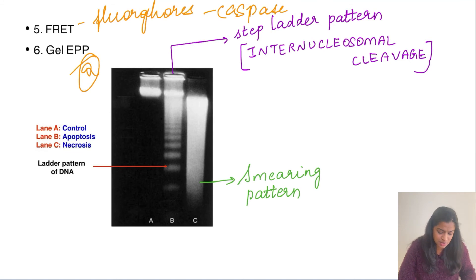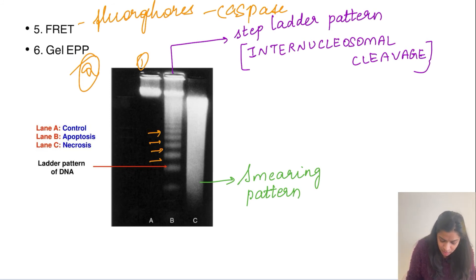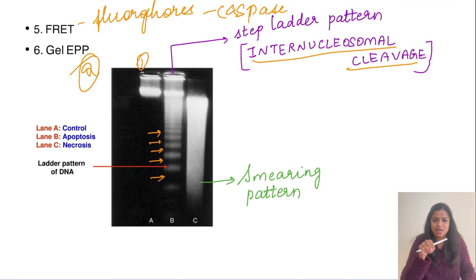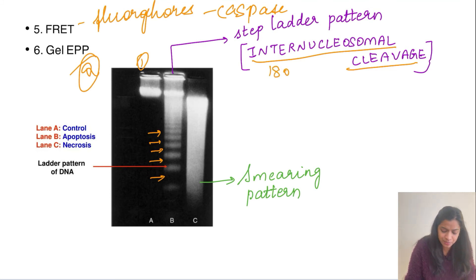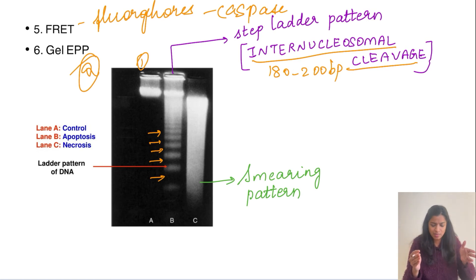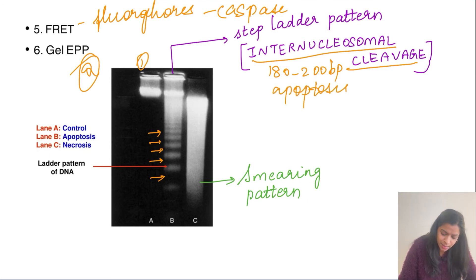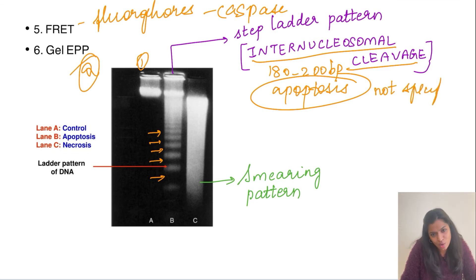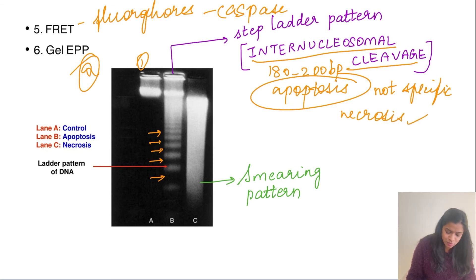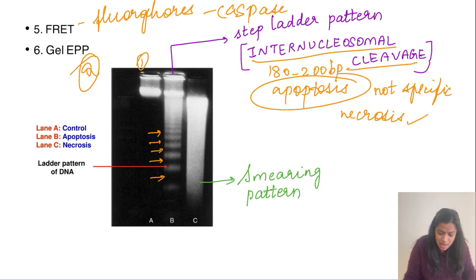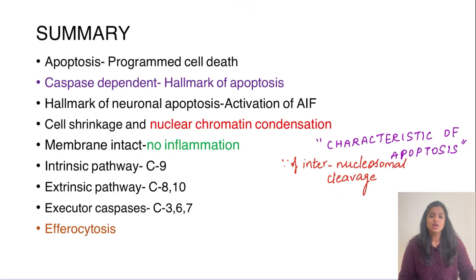Gel electrophoresis has also been asked as a picture-based question. A normal cell shows a single band. An apoptotic cell shows multiple breaks corresponding to internucleosomal cleavage, producing a step-ladder pattern — because DNA is fragmented into 180 to 200 base pair pieces. However, this step-ladder pattern is not specific to apoptosis as it can also be seen in necrosis. A smeared pattern on gel electrophoresis is seen in necrosis.